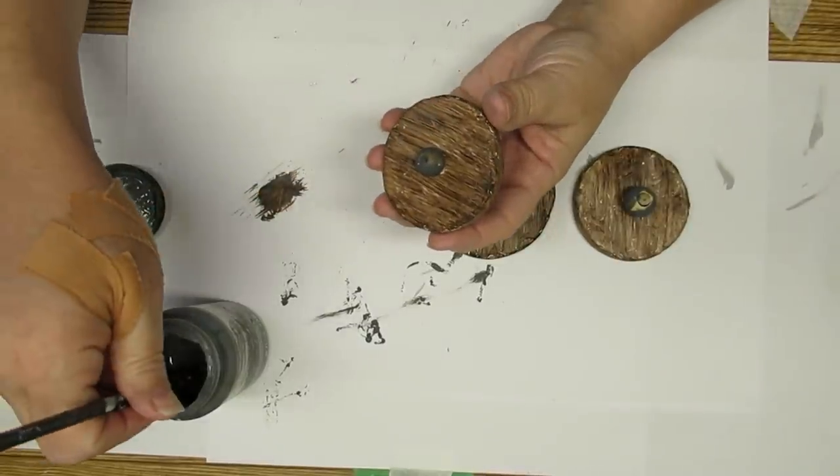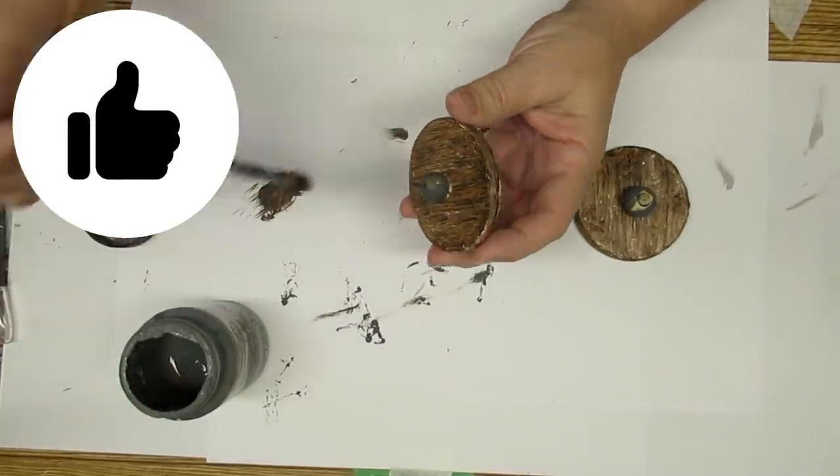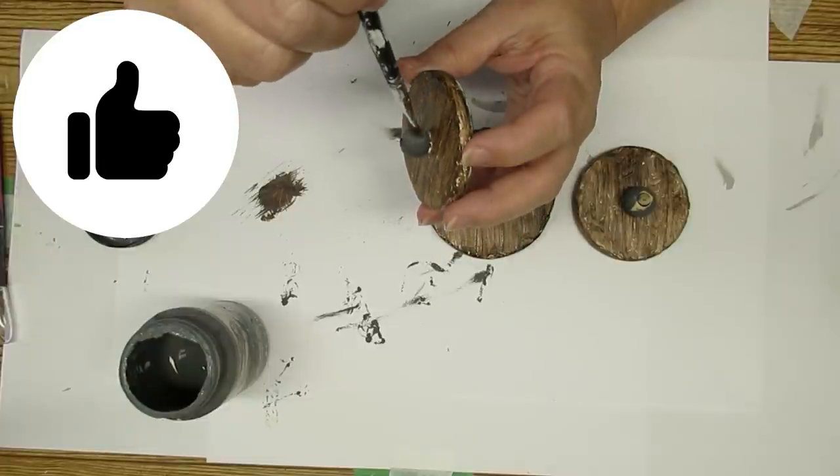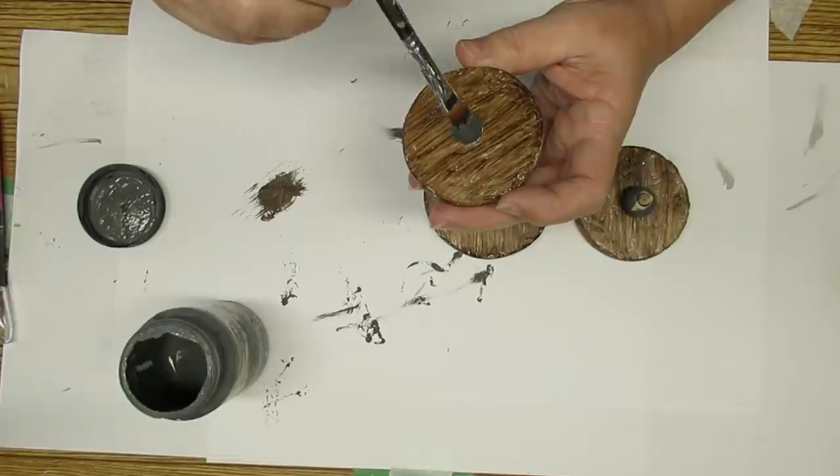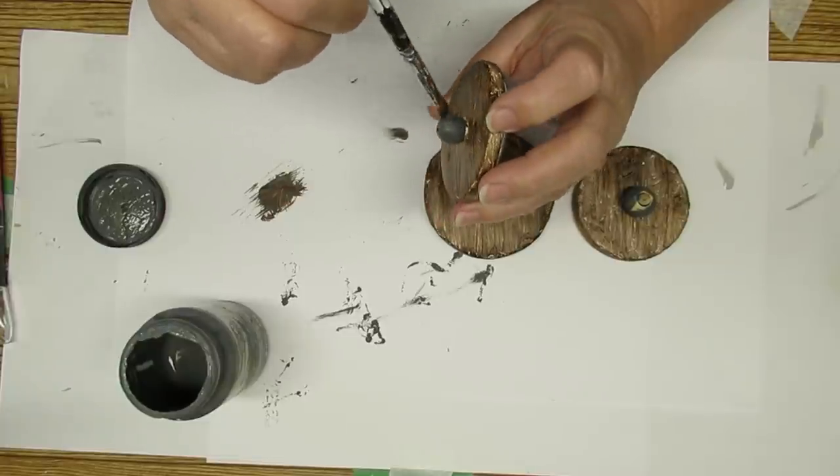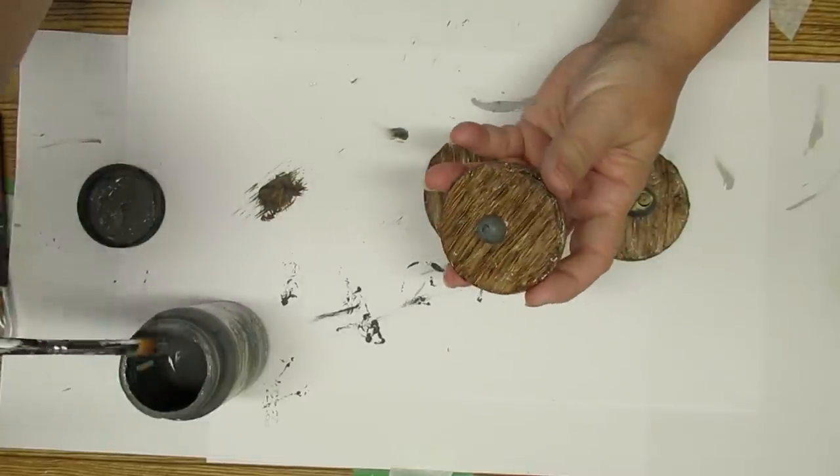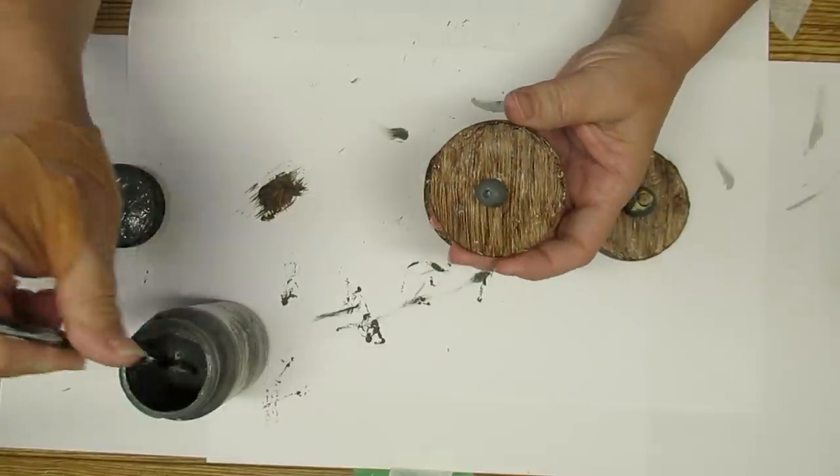I found that if I hot glued the beads right on top of the lids, it was so much easier to paint them. So I did that for the second coat. I didn't film myself hot gluing them on because I think that's pretty self-explanatory. At least I hope it is.